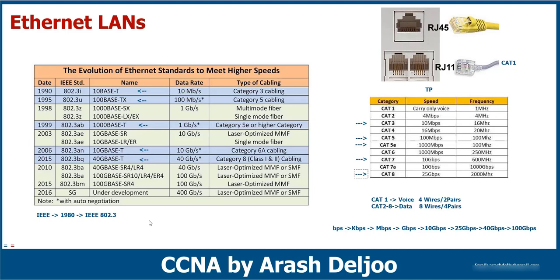40G means 40 billion bits per second can be sent using Category 8 cable. Now let me review fiber optic cables, but before that I want to talk about the word 'base.' The first number in a standard name is the speed, the last character refers to the medium such as twisted pair, but what does 'base' mean?